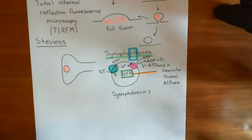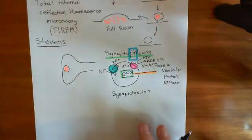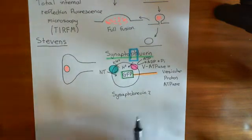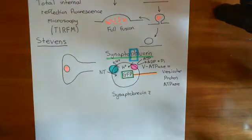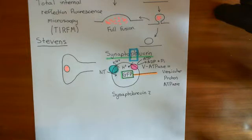Welcome to this next video in which we are discussing kiss-and-run fusion. We've seen how synaptic vesicles have a very high proton concentration within them, because of the work of the vesicular ATPase, which is continuously pumping protons in. The physiological purpose of this high proton concentration is so that we can use that proton gradient to move the neurotransmitter into the synaptic vesicle by a secondary active transport mechanism.